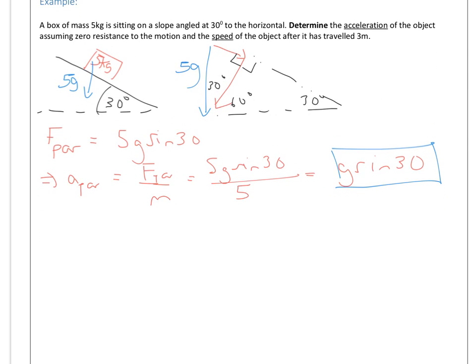And he wants to know the speed of the object after it has travelled 3 metres. So it's sitting, so that tells you it's stationary, so we know that the u parallel is 0. We know the displacement parallel, I'll just call it s, is 3. We know the acceleration is g sine 30, and we're trying to get v. So we need an expression with all of those in, so that's going to be v squared is u squared plus 2as.